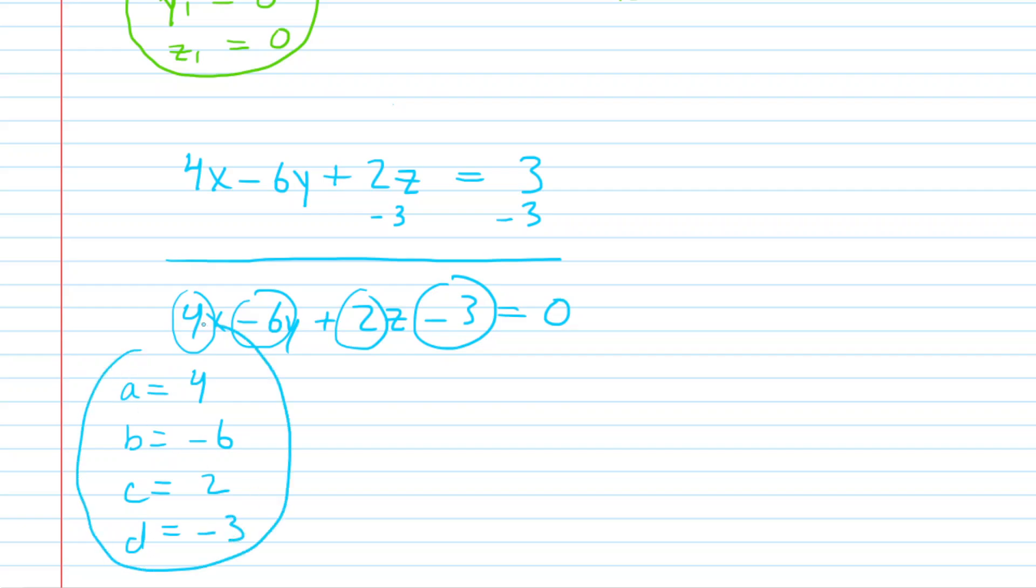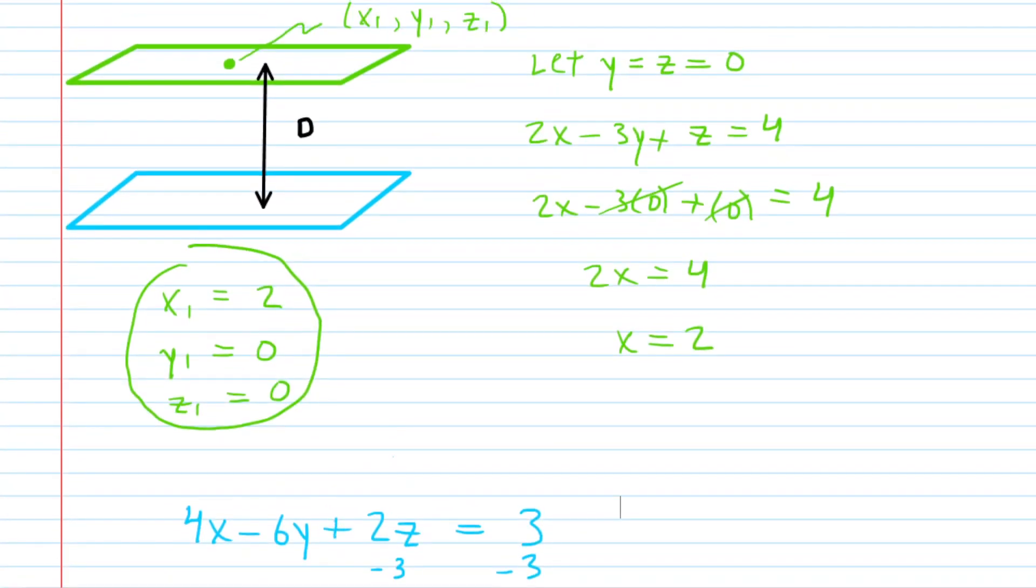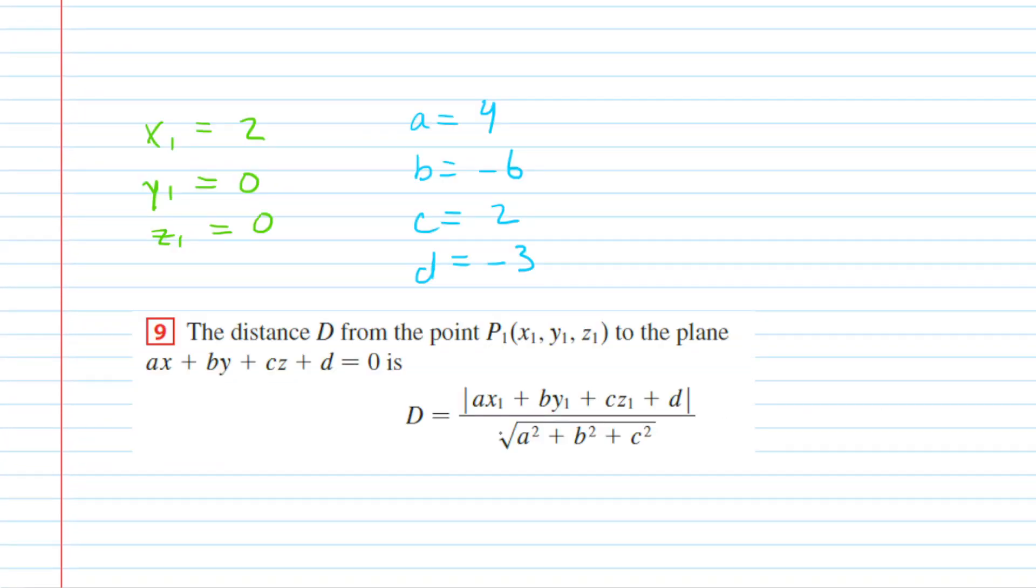So, we have our a, b, c, and d. We also have our x1, y1, z1 from earlier. So, let's take a look at the equation now for the distance between a point on one plane and the actual second plane. So, there is a nice, easy formula for that. And so, here it is.